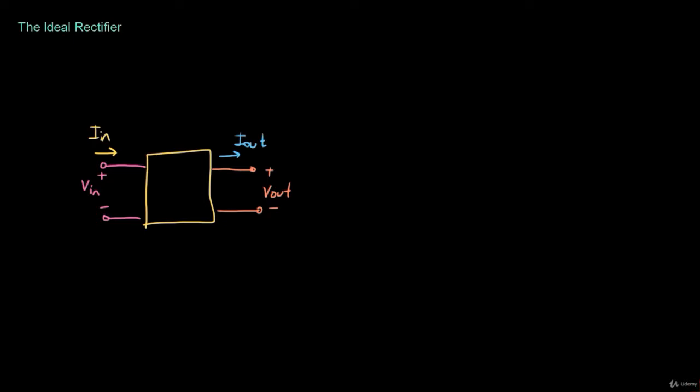A typical symbol for a rectifier looks like this: you have a box, and at the input you have a sine wave drawn, and at the output you have a DC voltage. This symbol is for alternating current and this symbol is for direct current.